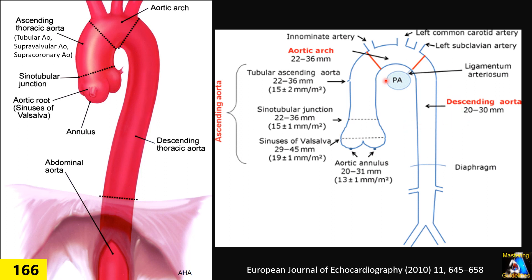Because of the importance of aortic size — especially as the most important risk factor for aortic dissection and rupture — measurement of the aorta at different levels is very critical and important in evaluation of the patient. Now let's see how we measure and how we get those views for measuring each spot.